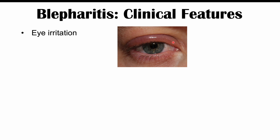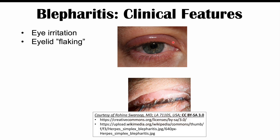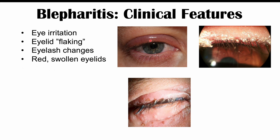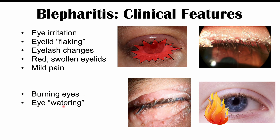The clinical features of blepharitis include eye irritation, eyelid flaking with scaling around the eyelashes, eyelash changes such as change in direction, bending, or reduced number, red and swollen eyelids, and mild pain. Additional features include burning eyes, eye watering, red eyes, and a sensation of a foreign body in the eye — a feeling of grit or something in the eye.